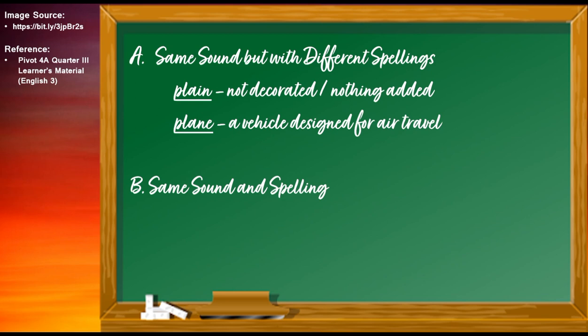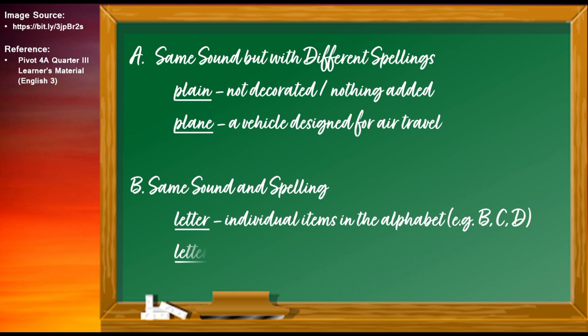There are also words which have the same sound and spelling. For example, we have the words LETTER and LETTER. The first word LETTER means individual items in the alphabet — for example, the letters B, C, and D. The second word LETTER refers to a male. The words LETTER and LETTER are also homonyms.